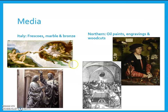In terms of media, Italian Renaissance art, especially the early Renaissance, mostly used frescoes. Frescoes are paintings made on wet plaster — you put up wet plaster, paint it while it's still wet, and you end up with really bright, vivid colors. They're also working in marble and bronze, making statues to imitate the classical world.